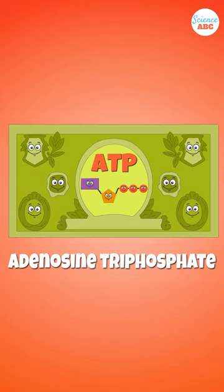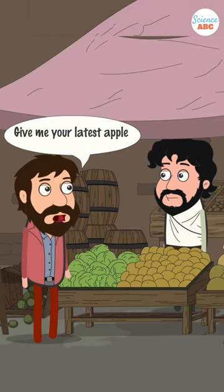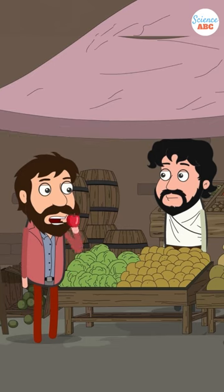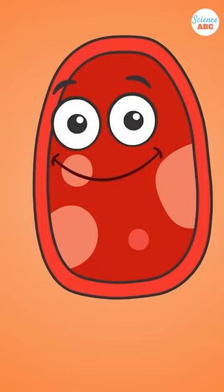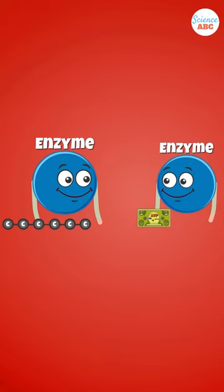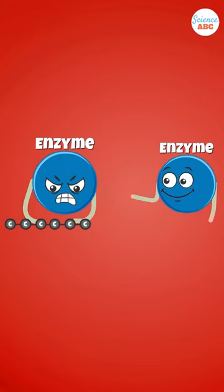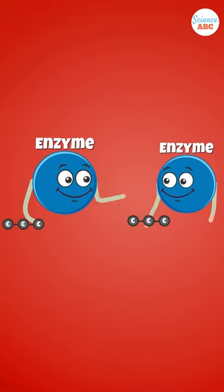Adenosine triphosphate is a cell's energy currency. Just as you might exchange money for a shiny new thing, a cell spends ATP in exchange for energy, which it then uses to do some form of work.